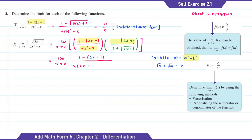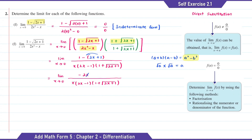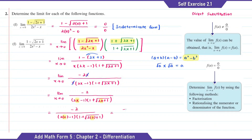So x bracket (2x minus 1) times (1 plus square root of 2x plus 1). When we expand the numerator, it will be 1 minus 2x minus 1, which is equal to negative 2x. So here we can cancel the x. Now when we substitute x with 0, we get negative 2 over negative 1 times 2, which is equal to negative 2 over negative 2, which is equal to positive 1.